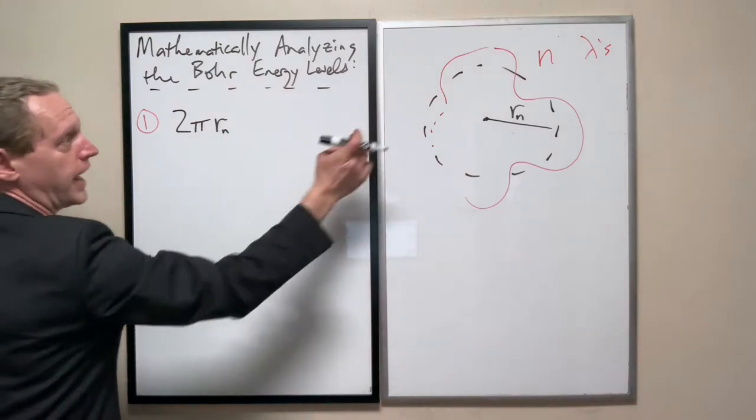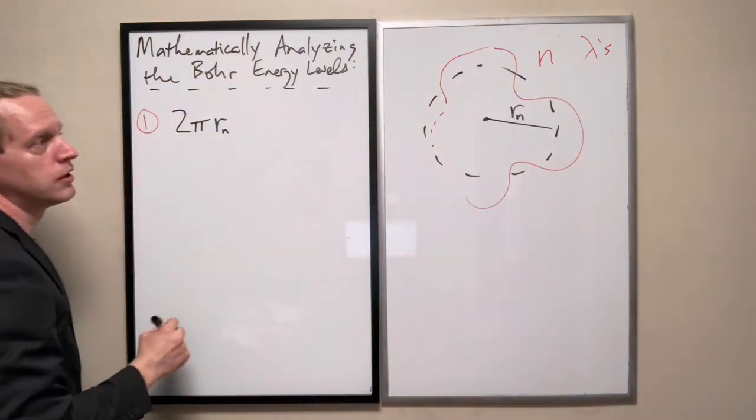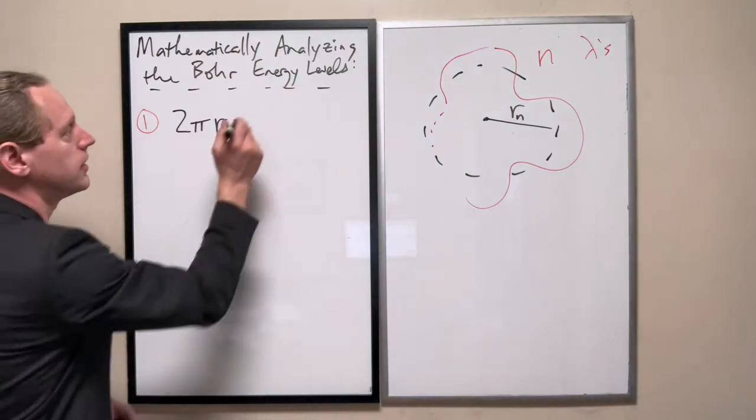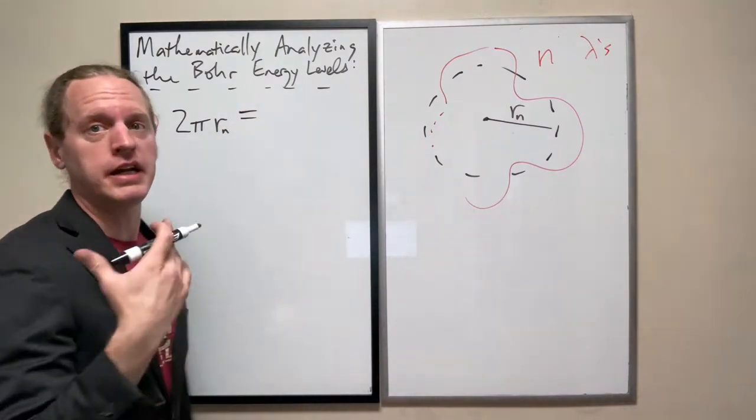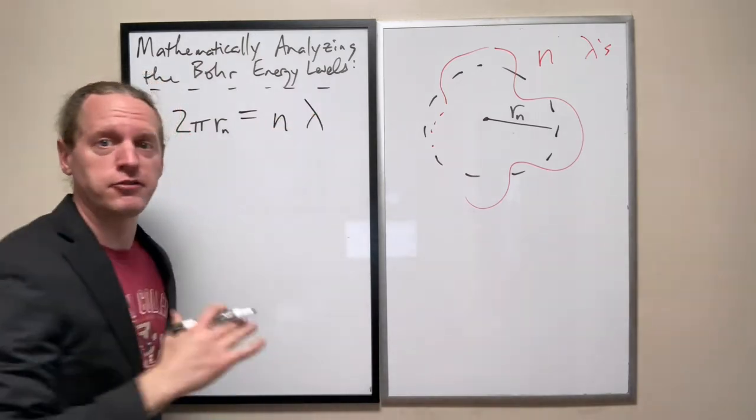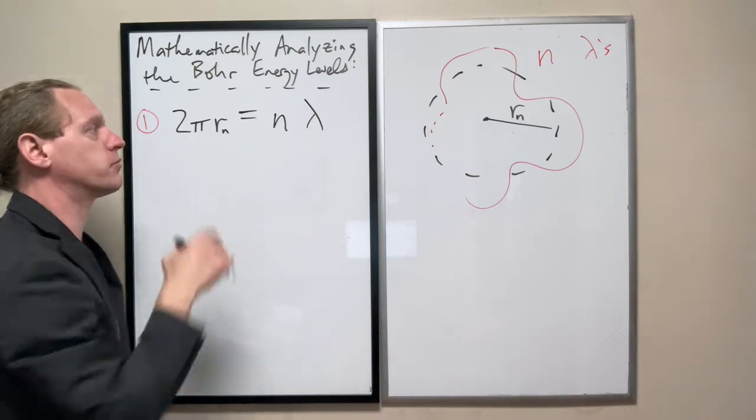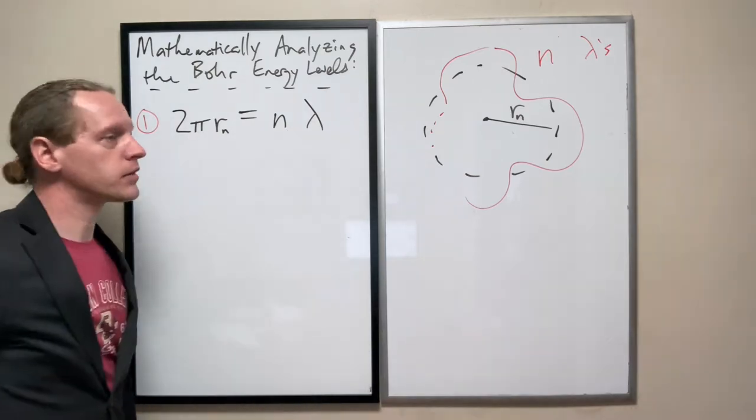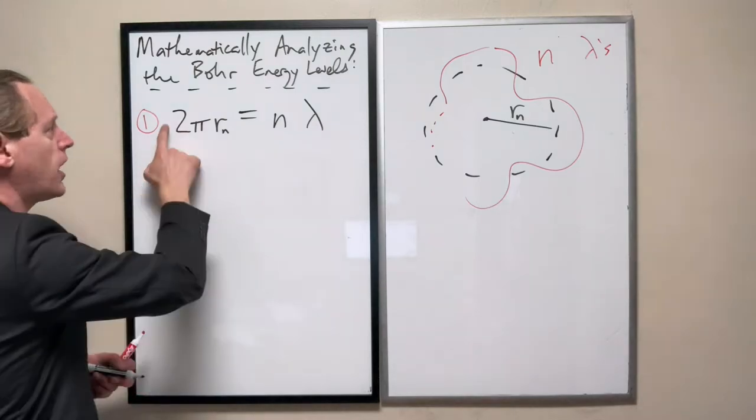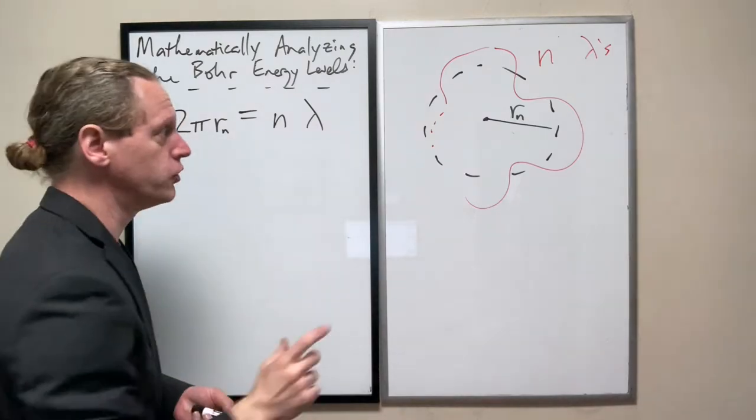The circumference of that circle that I just drew, if we take de Broglie's hypothesis to be true, this must simply be an integer multiple of lambda. And specifically that integer is exactly n, the same as that subscript. So this is applying de Broglie's model to the Bohr atom.